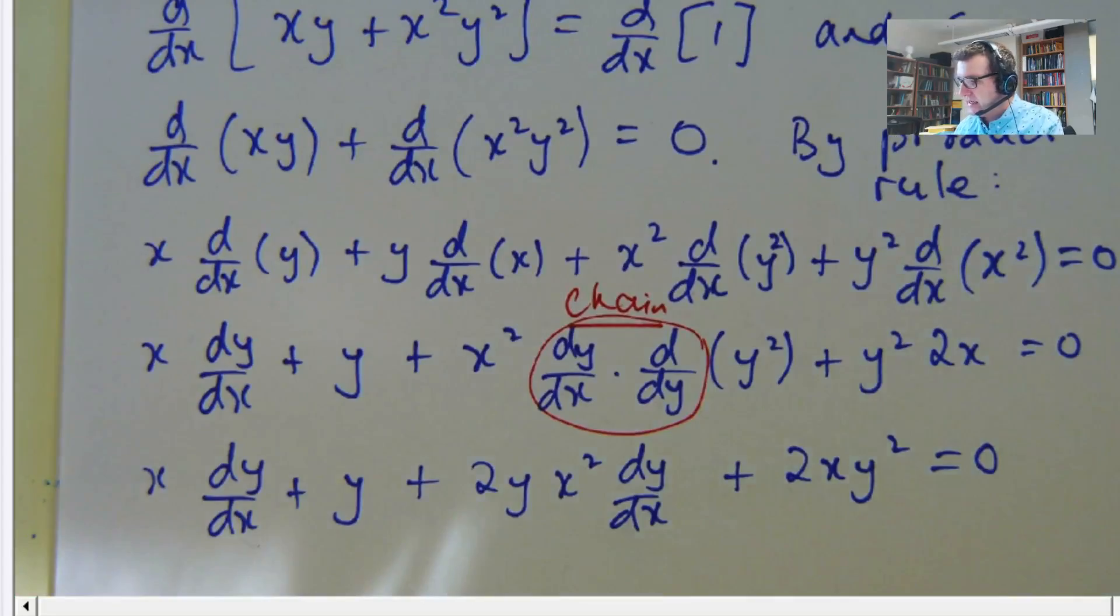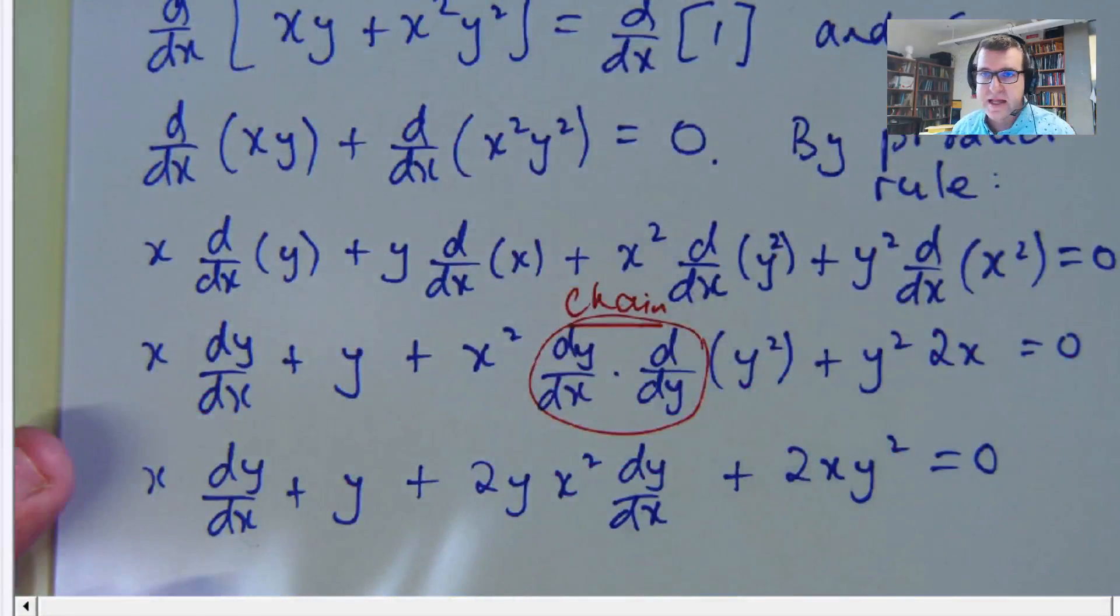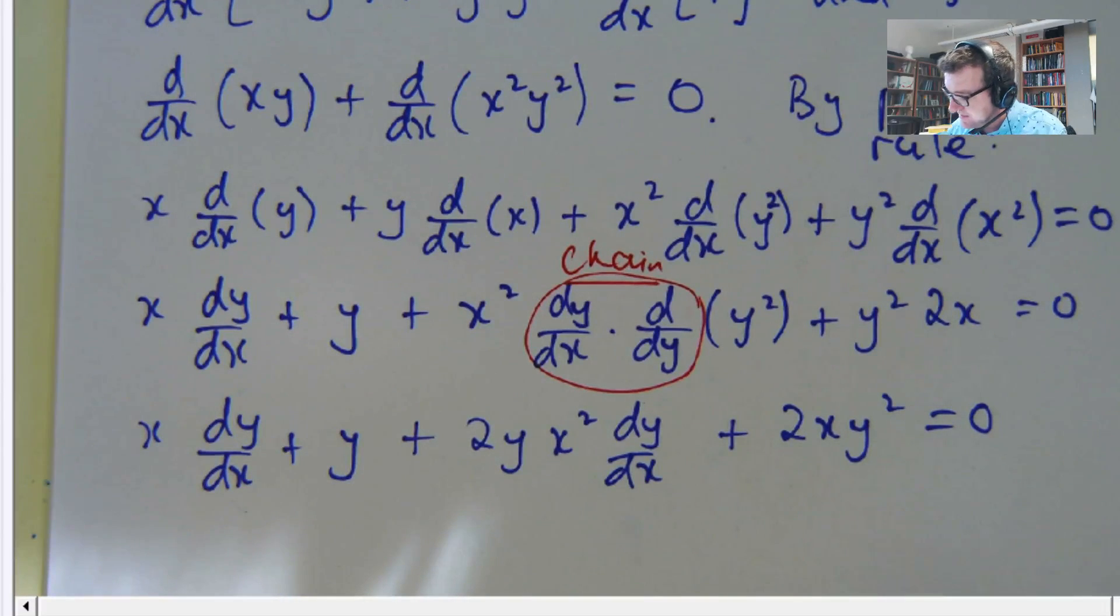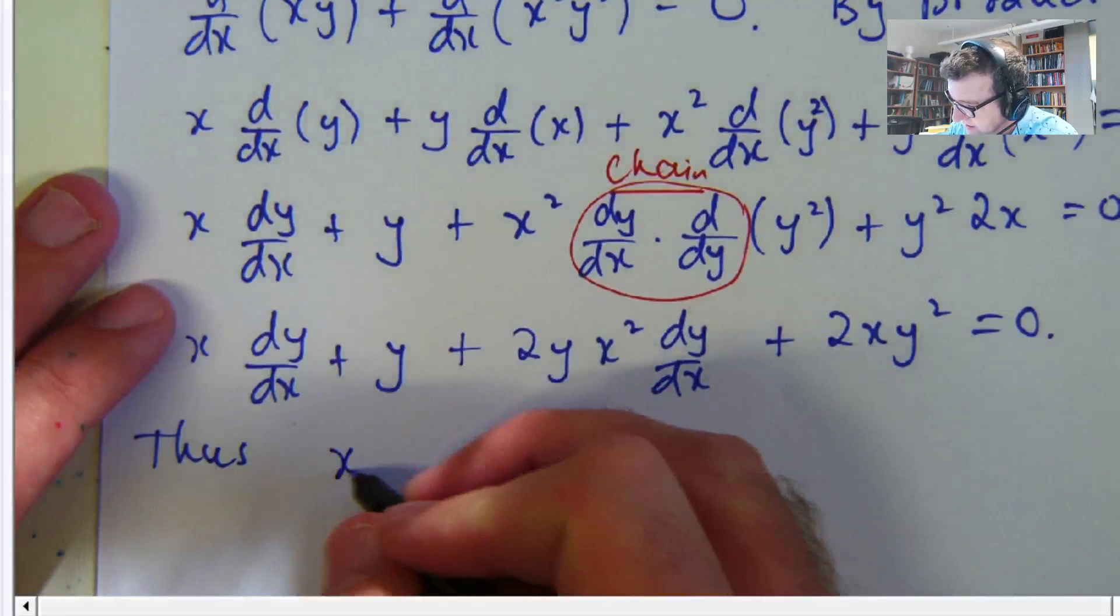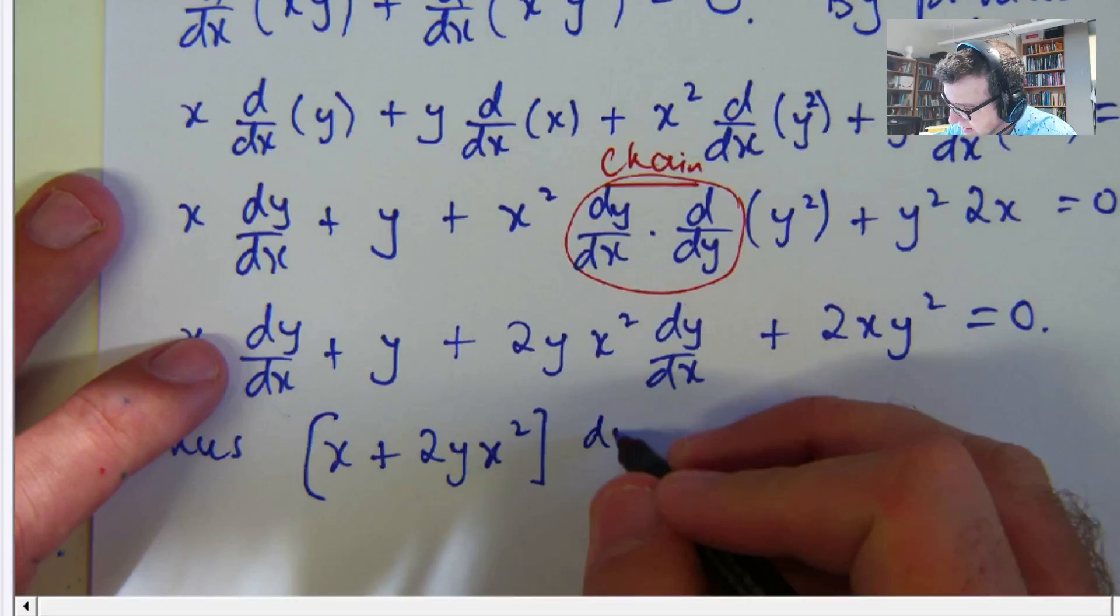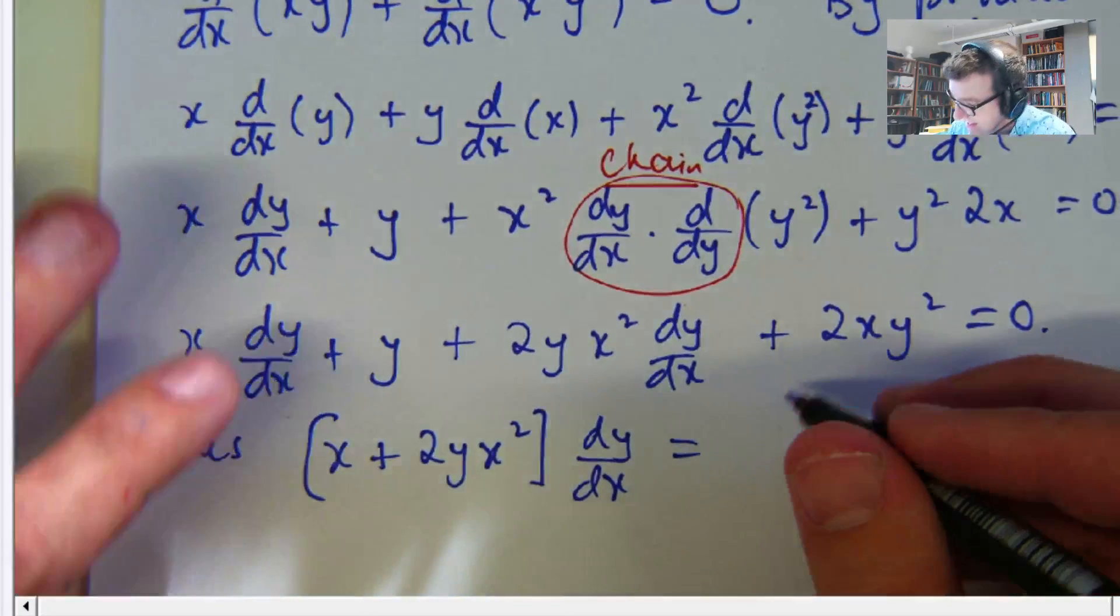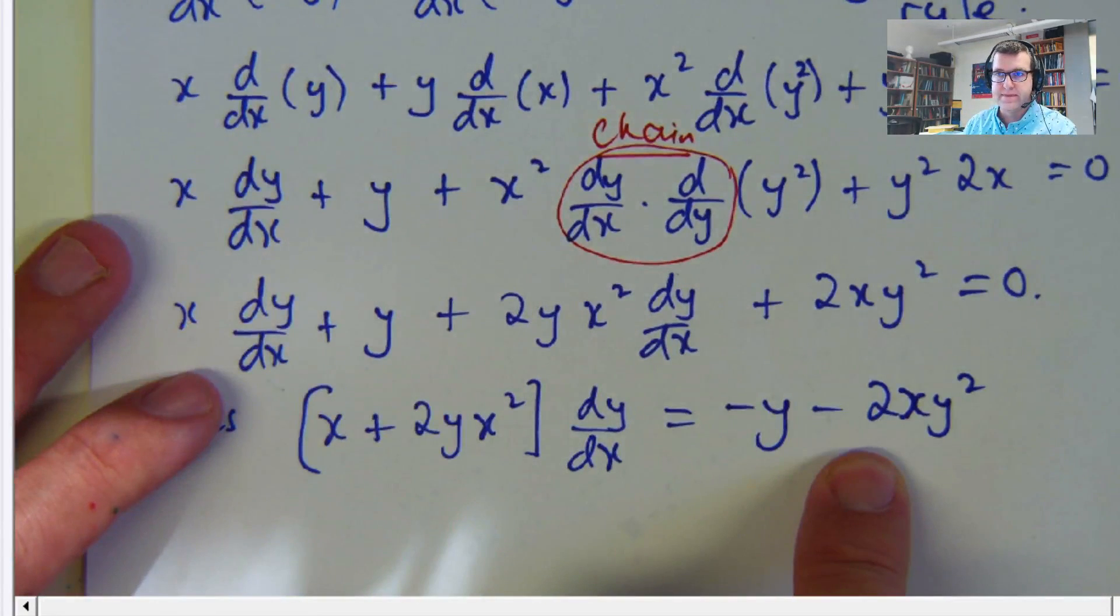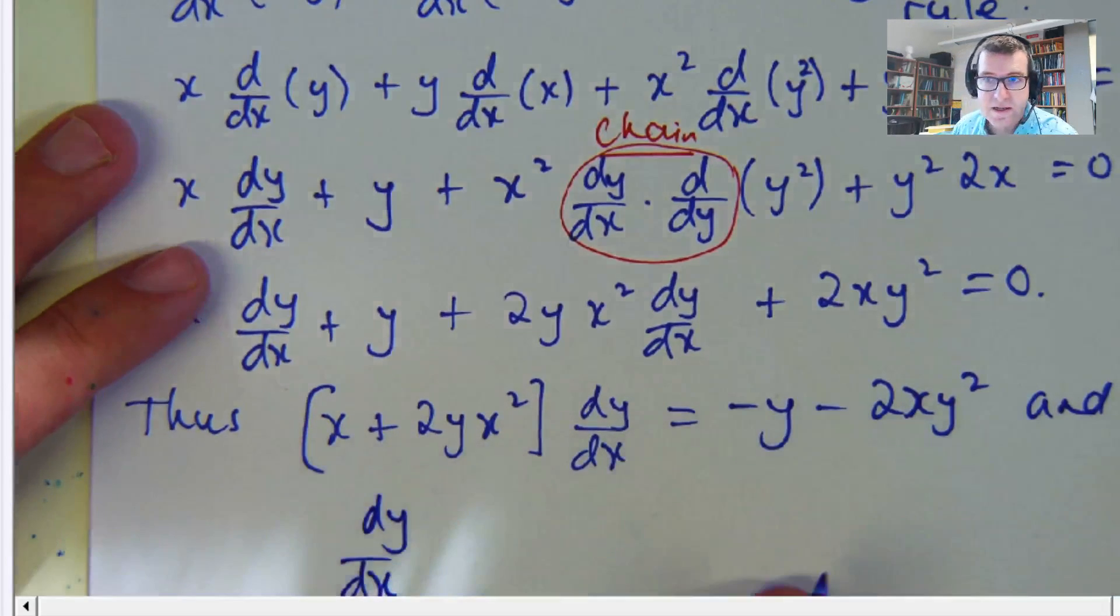The last part of the step, as we mentioned over here, was a rearrangement to make dy/dx the subject. So let's take the like terms together. We'll move the other terms to the left-hand side. And so there's a common factor there. So I'm going to write x plus 2yx squared. So for that term and that term times dy/dx. I'm going to move that term to the other side and that term to the other side. And now I can just divide to make dy/dx the subject.